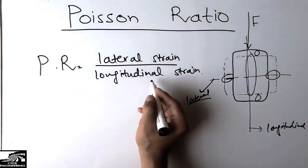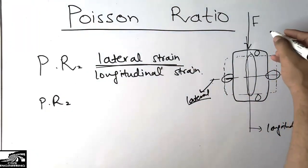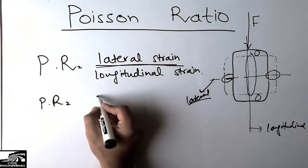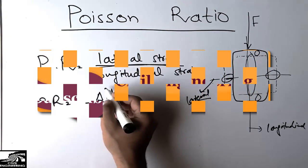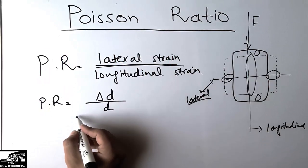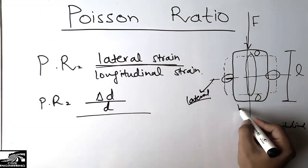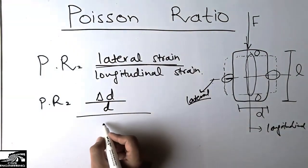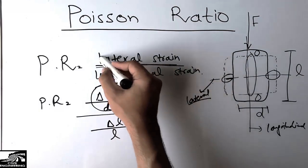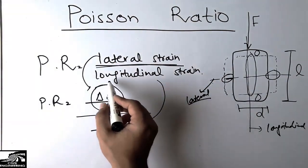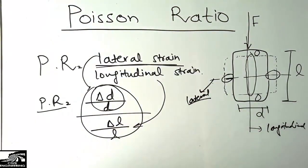The ratio of the lateral strain — how much change occurs in the lateral direction, which is delta D divided by the original diameter D — divided by the longitudinal strain — which is the change in length divided by the original length L — gives us the Poisson ratio of the material.